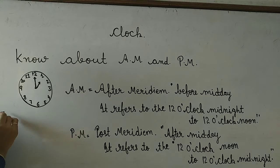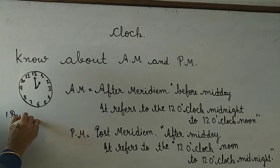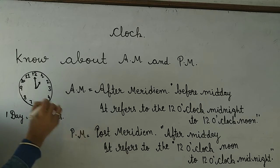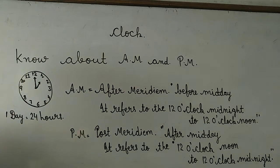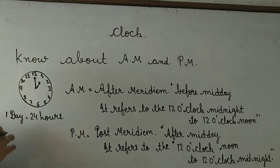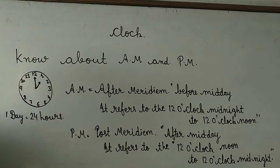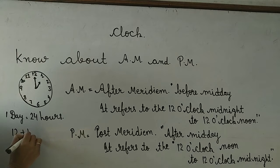One se lekar 12th hour, lekin joh humara day hai, us mein hours toh hoot hai 24 hours. Toh aapko pata hai ki 24 hours hoot hai. Ab 12 hours hai clock mein, lekin day mein total hours kitnay hai — 24. Toh clock joh hai, is clock two times, din mein ye two rounds puray karta hai. Tabhi toh 12 plus 12 kitnay hours ho jayenge — 24 hours.